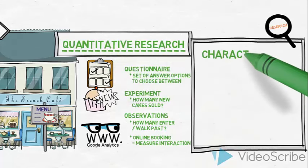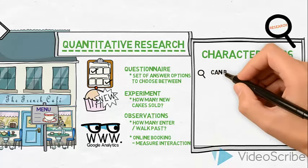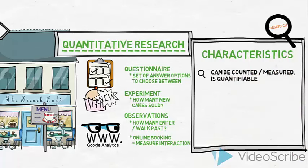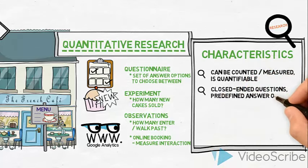So let us summarize the characteristics of quantitative data. Quantitative data can be counted and or measured. It is quantifiable. It is based on asking closed-ended questions, for example, by providing predefined answer options in a questionnaire.